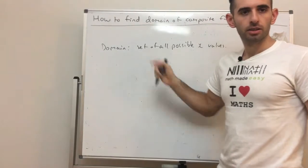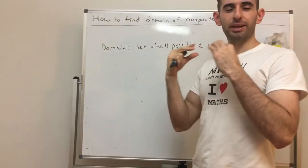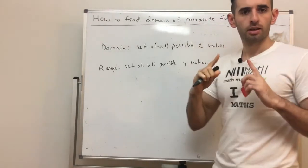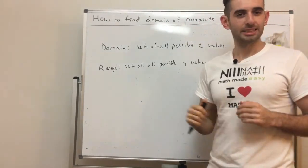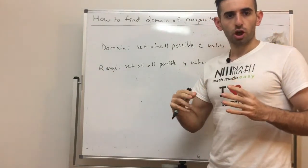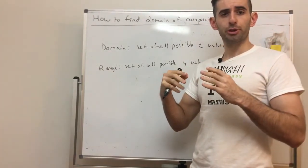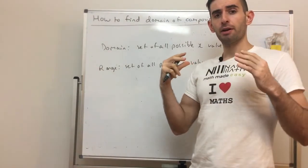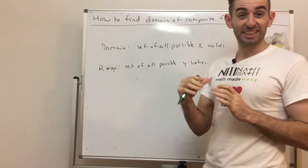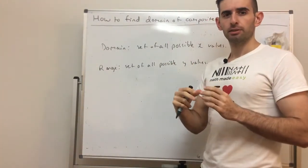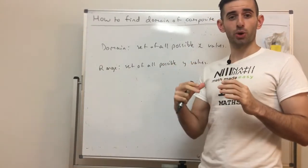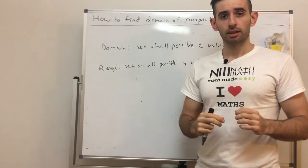Before we go into finding the domain for composite functions, what is domain? It's the set of all possible x values a function can take. And what is range? That's the set of all possible y values. For this tutorial, I'm going to assume you know how to find the domain and range for functions — domain more importantly. If you're unsure, make sure to comment below.